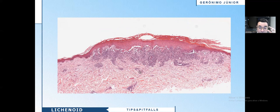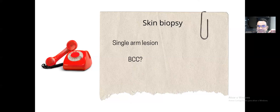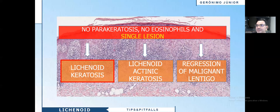Now see this case. It is a lichenoid infiltrate, similar to the previous case — you might think about lichen planus. But in this case, we see lichenoid infiltrate, subepidermal clefts, and many necrotic keratinocytes. There is an important clinical detail: single arm lesion, with the clinician considering basal cell carcinoma. If you don't have this clinical information, you need to ask for it — call the dermatologist. This case is an example of lichenoid keratosis.